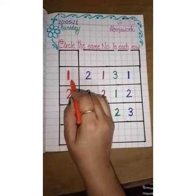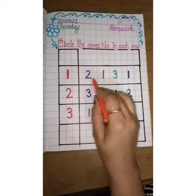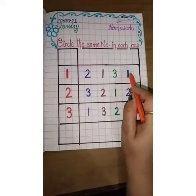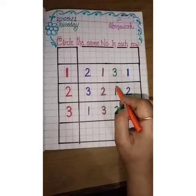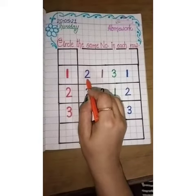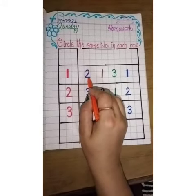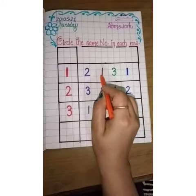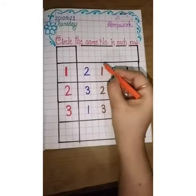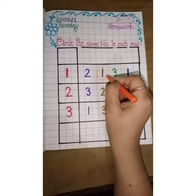Now it is one. We will find out one in each row and circle it in the same row. Which number is this? Yes, it is one. It is one. Yes, circle it.